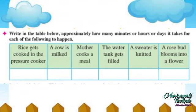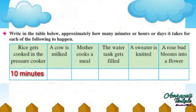Next question: Write in the table below approximately how many minutes, hours, or days it takes for each of the following to happen. Rice gets cooked in the pressure cooker — ten minutes.